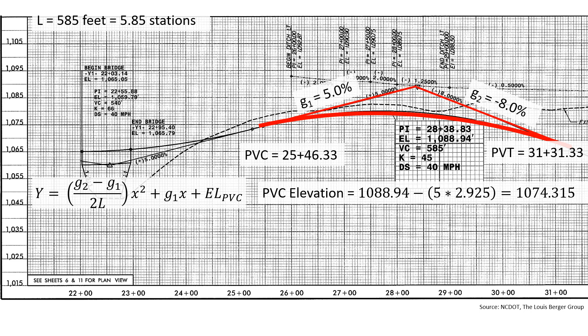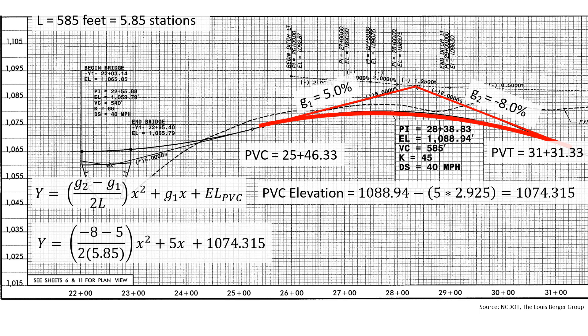Now we can work on building the parabolic equation for this particular curve. We're going to plug in the values we know. Y equals negative 8 minus 5 over 2 times 5.85 times x squared plus 5x plus 1,074.315.